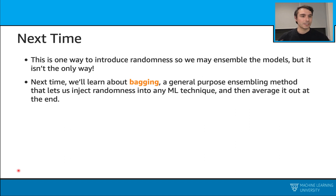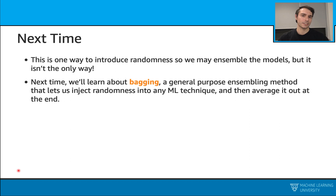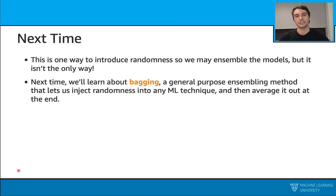In the next class, we are going to look at another ensemble technique called bagging. With this technique, we are able to introduce this randomness into any other ML technique, not necessarily a tree-based method. And similarly, we can average out this randomness at the end. See you in the next lecture.